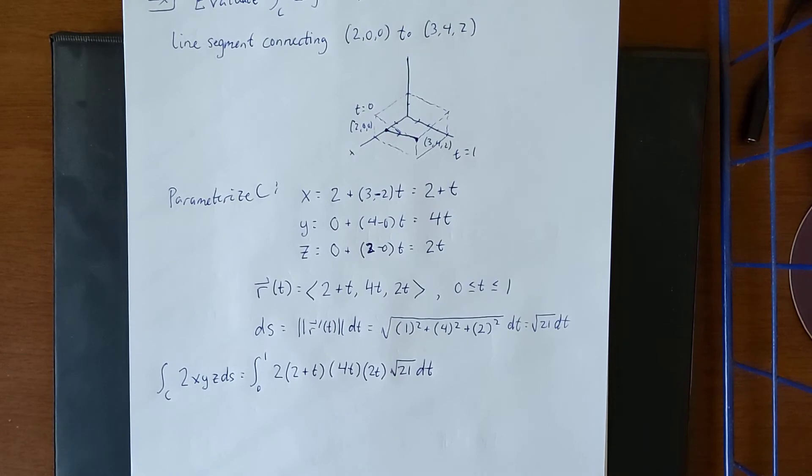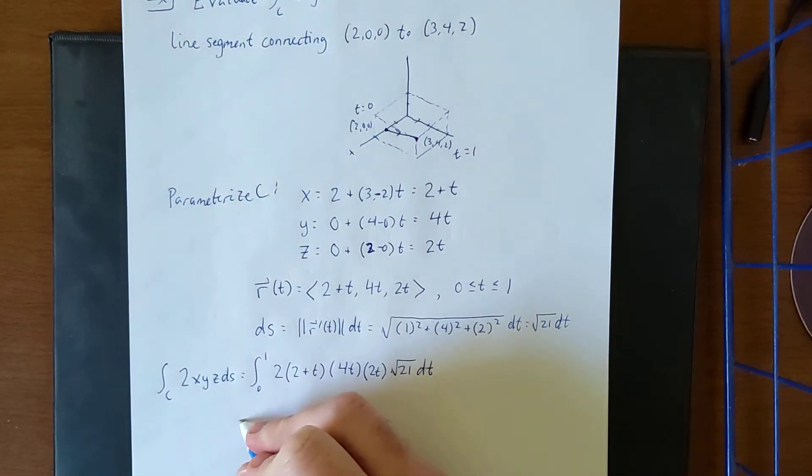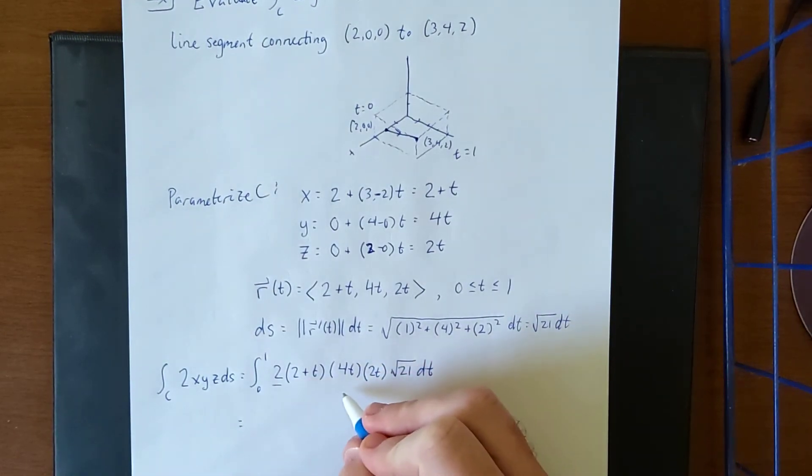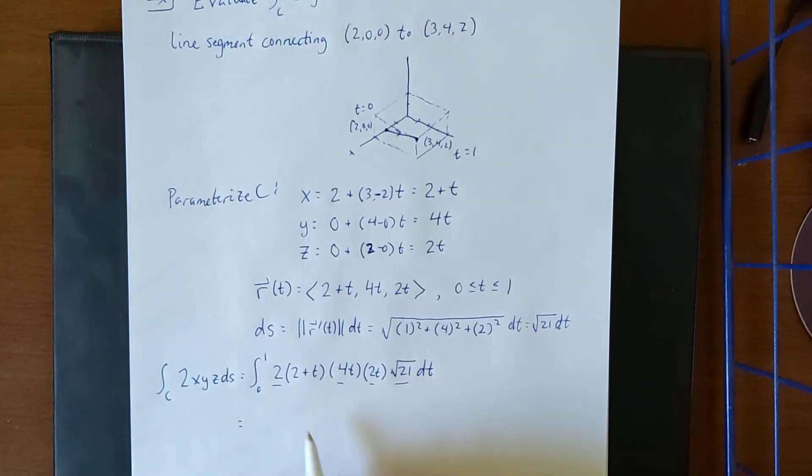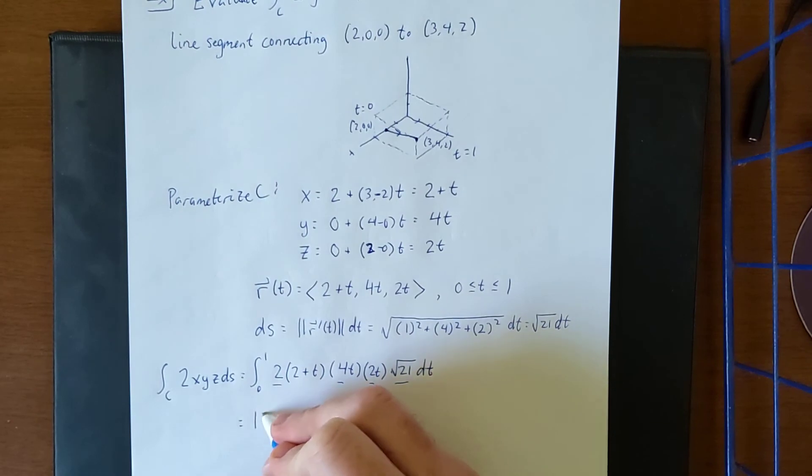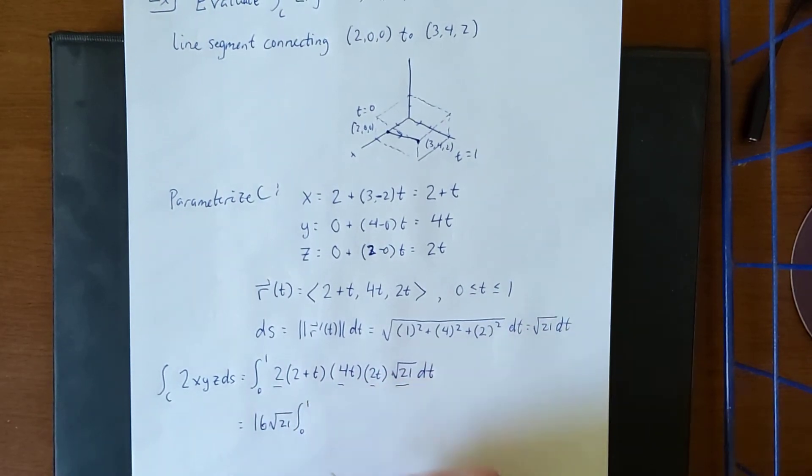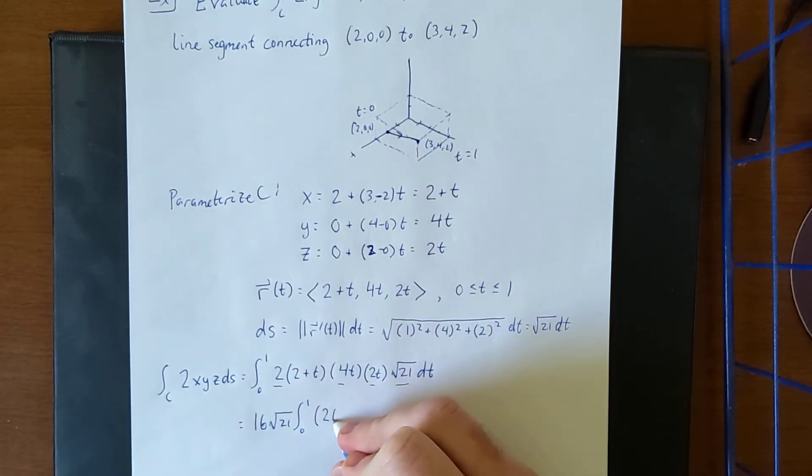So what I'm going to do is take all of these constants and pull them outside of the integral. I'm going to pull out the 2, the 4, the 2, and the √21. 2 times 4 times 2, that'll be 16√21. And I'll take the remaining t, and t, and 2+t, and multiply those together. It'll be 2t² + t³ dt.